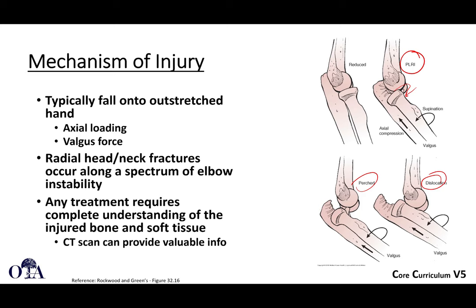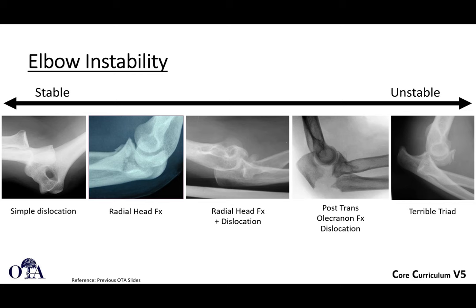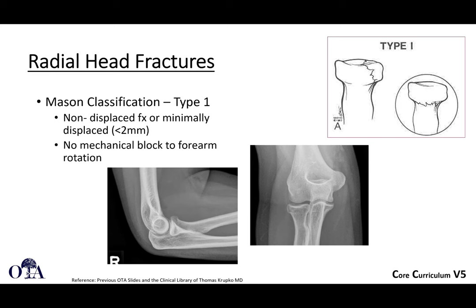Any treatment requires a complete understanding of the injured bone and soft tissues, and CT scan can help with this. There is a spectrum of injury from relatively simple elbow dislocations with pure ligamentous injury — where a stable reduction allows early motion — to more complex elbow dislocations, leading to the terrible triad, which involves a radial head fracture and coronoid fracture along with ulnohumeral dislocation.